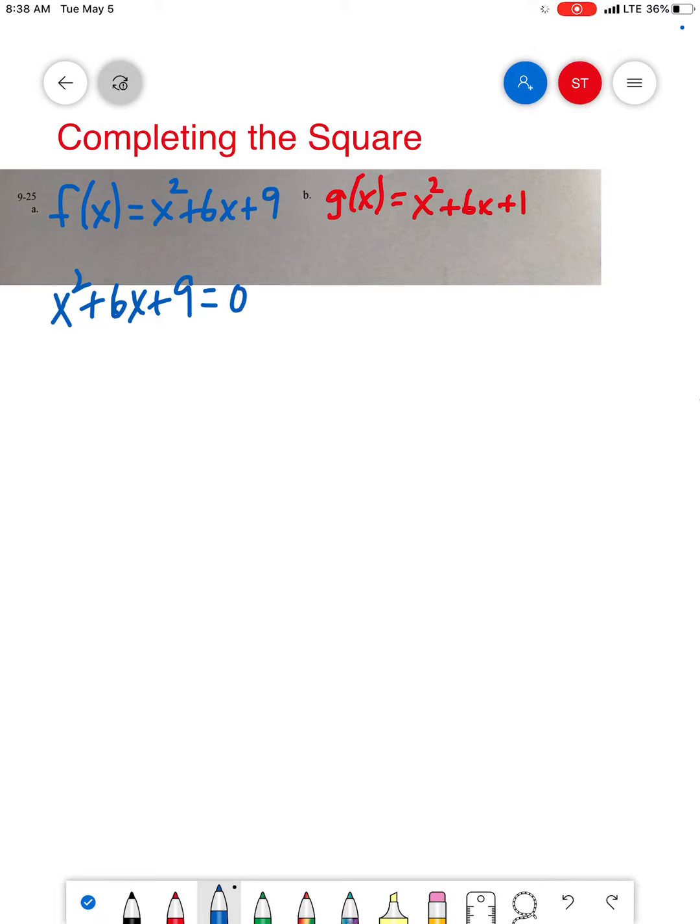Now, I could tell this right here is already a perfect square, but let's just see what happens. Subtract 9 on both sides and you'll notice how I left that blank space because I'm gonna add something there and I gotta add something there. What is that something? It's half of 6 is 3, 3 squared is 9, goes on both sides.